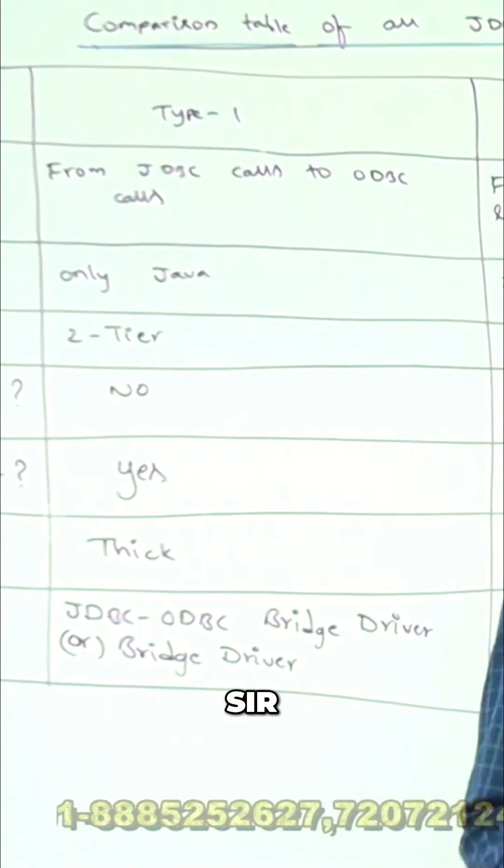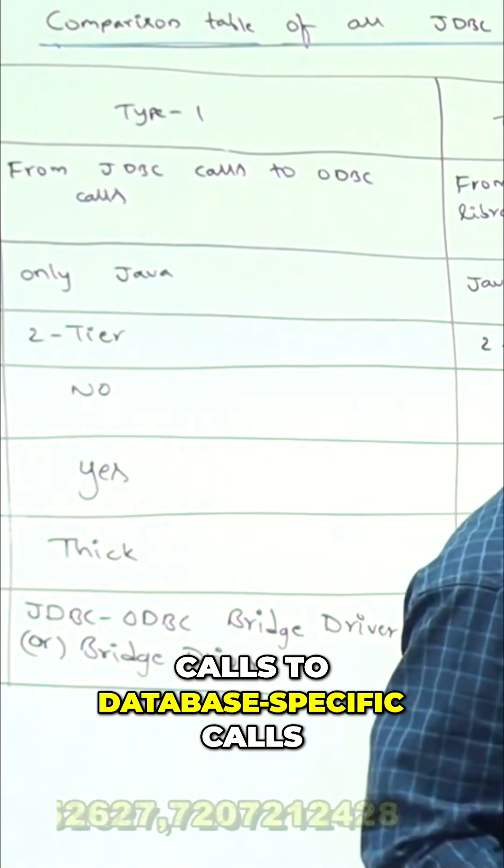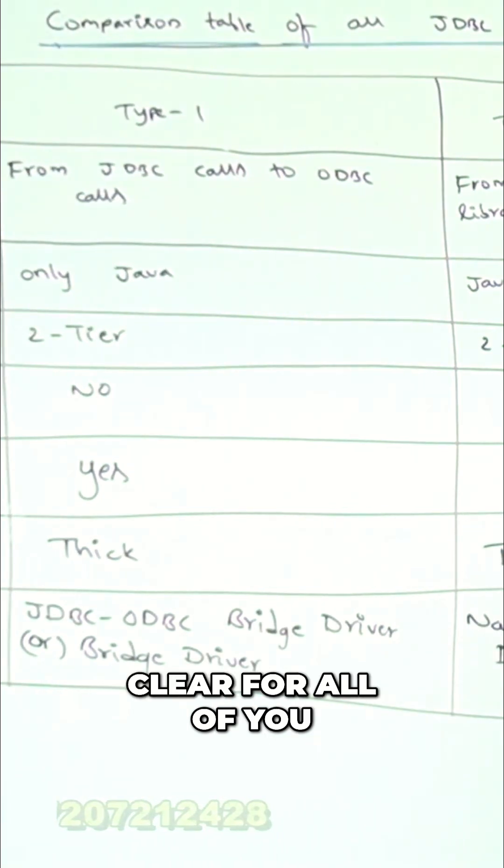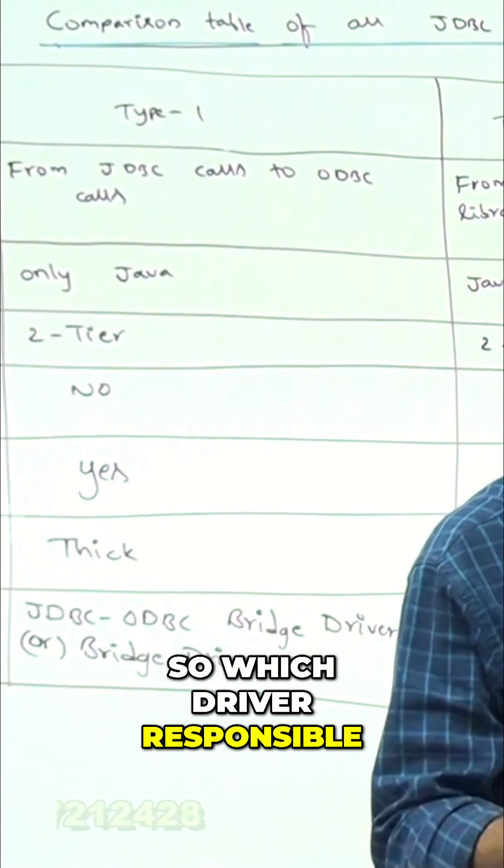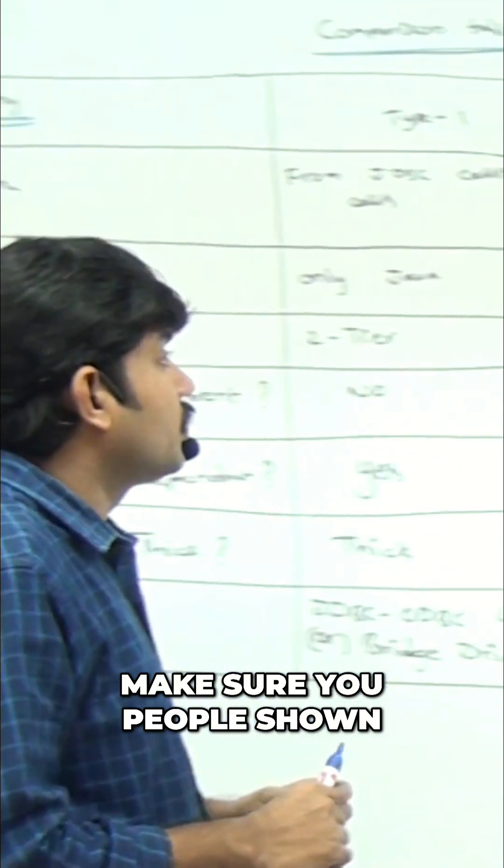What about type 4 driver? Direct conversion from JDBC calls to database specific calls. From JDBC calls to database specific calls - clear? For all of this, which driver is responsible for which conversion? Make sure you people should be aware, right?